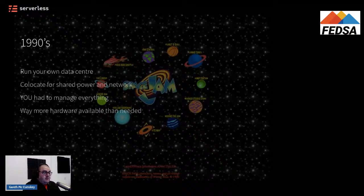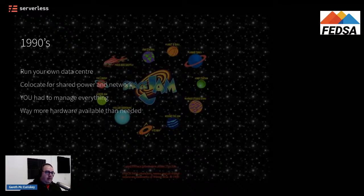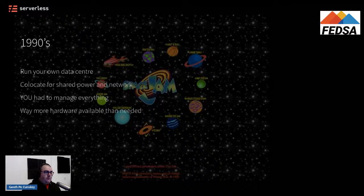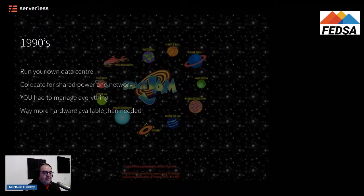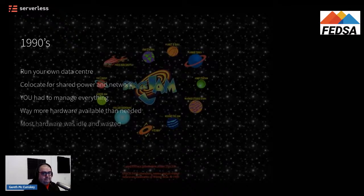One of the downsides of this process was that there was always way more hardware available than needed. If you imagine the time it takes to order a very large server, configure it, set it up, get it transported to a data center — by the time you finish that process, you're still ramping on users. You could put this machine into a data center only for it to be obsolete by the time it's in there. So you'd always over-provision, over-order, try to have far more hardware than you'd need sitting in a data center, which meant you might have stuff sitting there doing nothing. Most hardware would be sitting there idle and wasted.